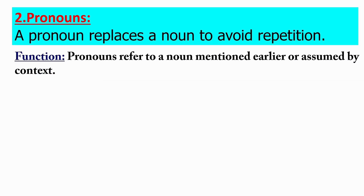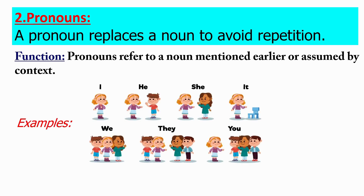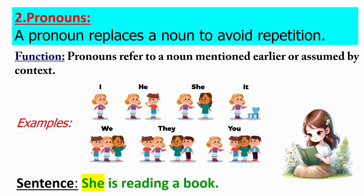Now let's check what are pronouns. A pronoun replaces a noun to avoid repetition. Pronouns refer to a noun mentioned earlier or assumed by context. For examples: I, he, she, it, we, they, you, etc. Now let's look at a sentence: "She is reading a book." Here, she is a pronoun, as it replaces the noun.